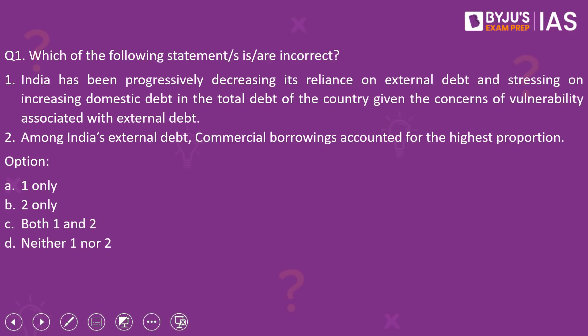Beginning with the first question of the day, which reads: which of the following statements is or are incorrect? The first statement reads: India has been progressively decreasing its reliance on external debt and stressing on increasing domestic debt in the total debt of the country, given the concerns of vulnerability associated with external debt. The second statement reads: among India's external debt, commercial borrowings accounted for the highest proportion.